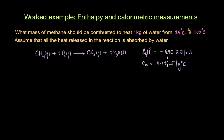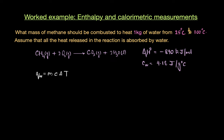To solve this question, firstly we need to calculate what amount of heat is actually required to raise the temperature of 1 kg of water from 25°C to 100°C. For this, we can use the specific heat capacity formula Q = mcΔT. I have referred to it as Q_water, because we are talking about the heat absorbed or heat required by water to raise the temperature.